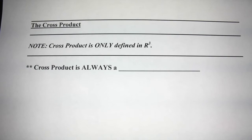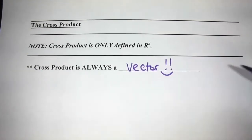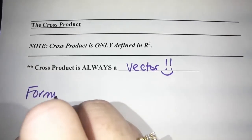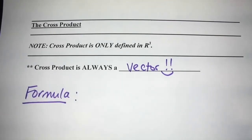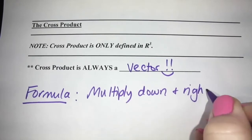Next, cross product. A couple of important notes: cross product is only defined in R3, so if a property question involves Rn, R2, or R4, anything with cross product would be undefined. Also, cross product is always a vector — it is never a scalar, unlike dot product which gives a scalar.